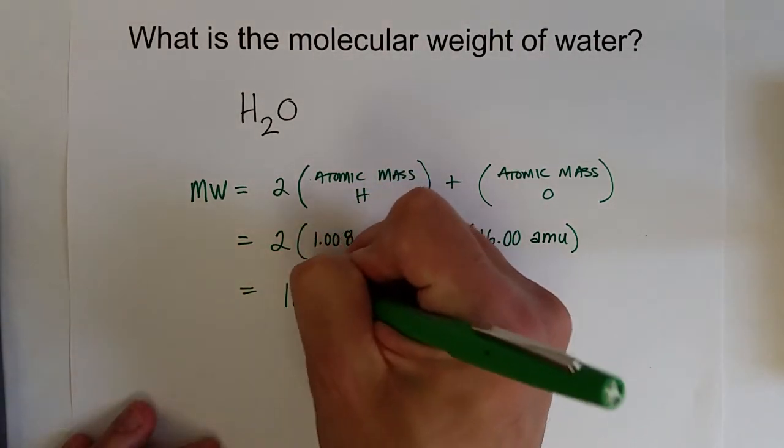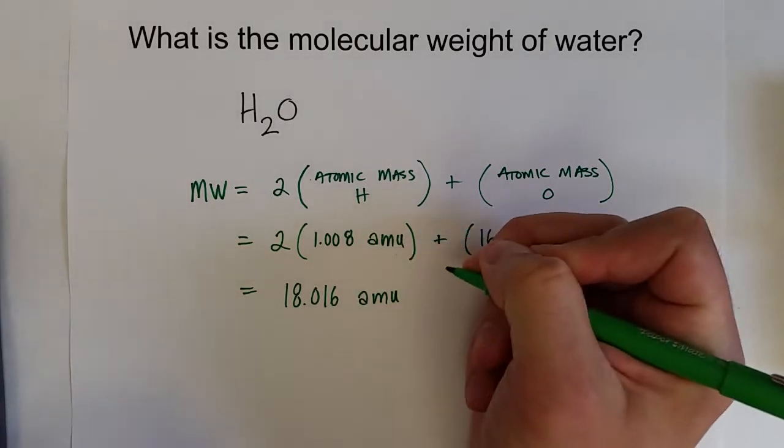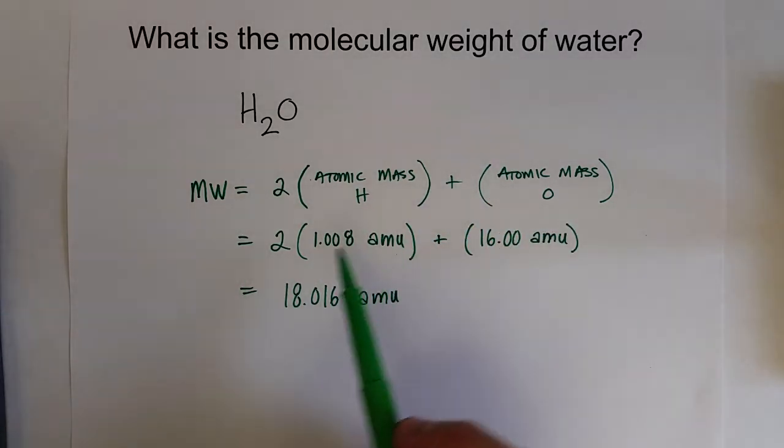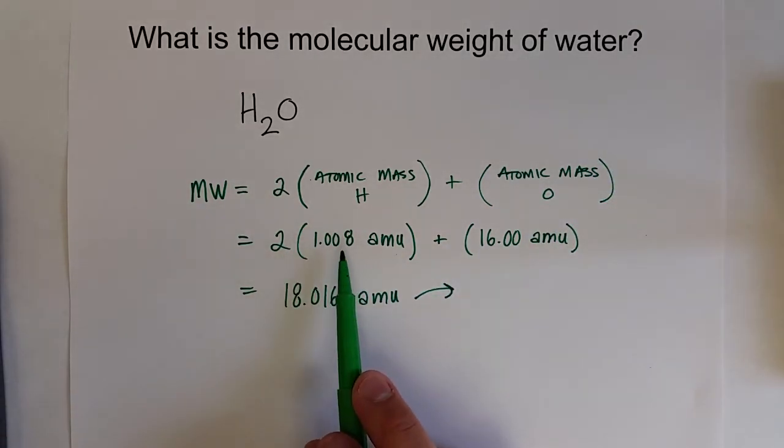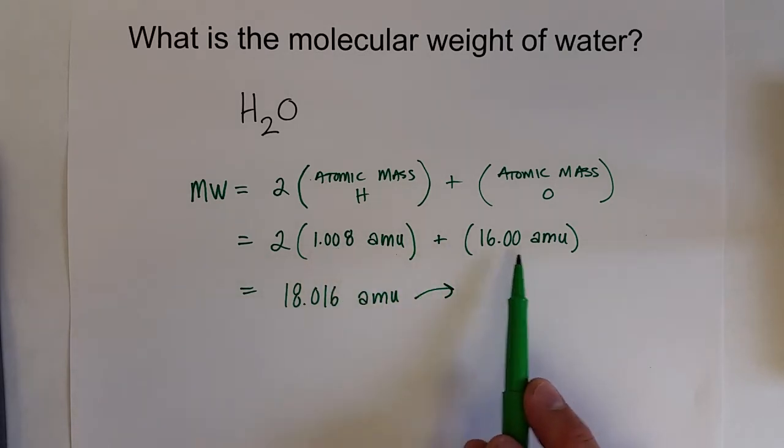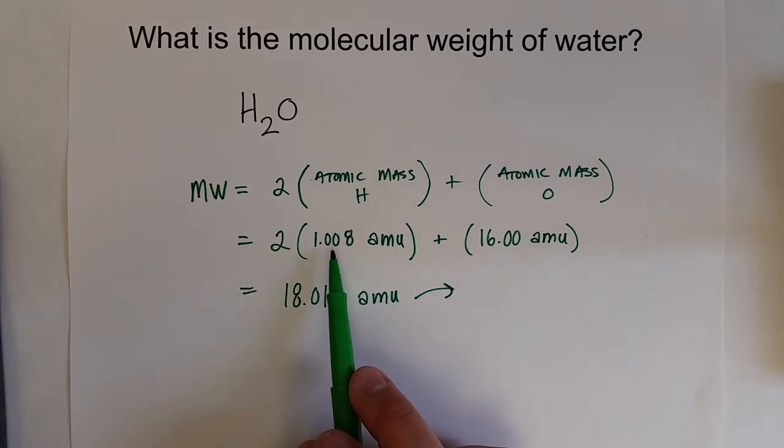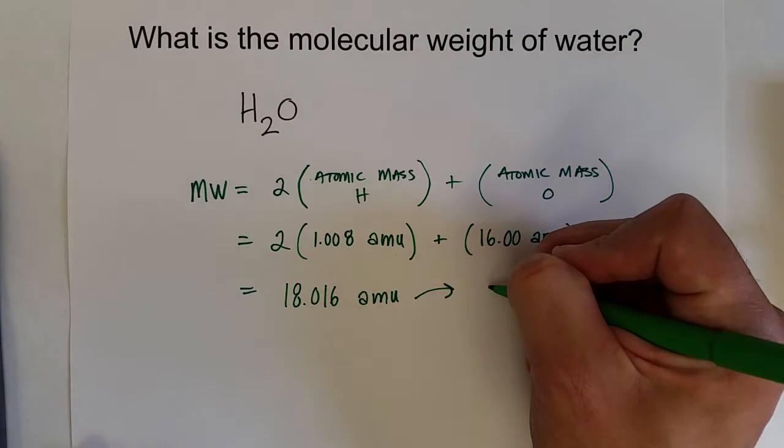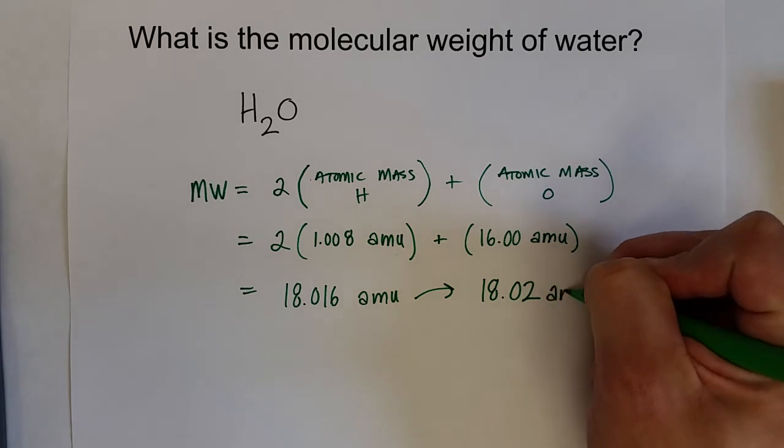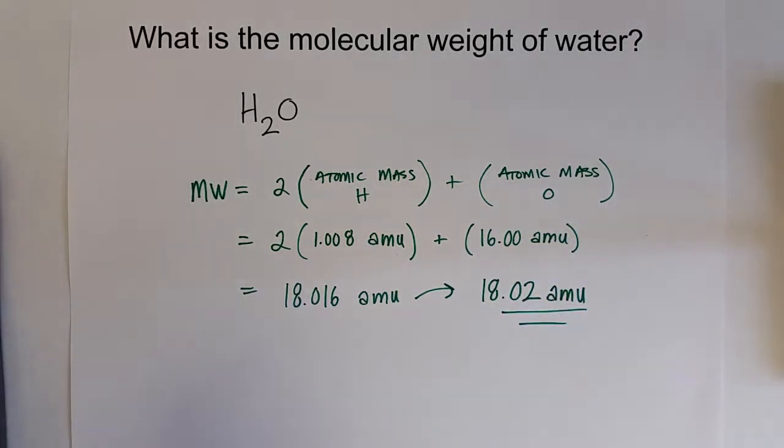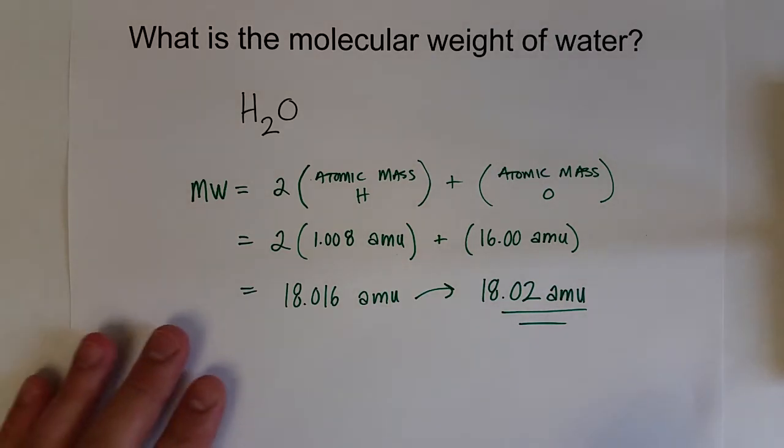18.016 amu. But we have to think about significant figures in this value. We need to think about addition and subtraction. We've got three decimal values here, two decimal values here, so we need to cut this down to two decimal values for significant figures. So that will be 18.02 amu is the molecular weight of water.